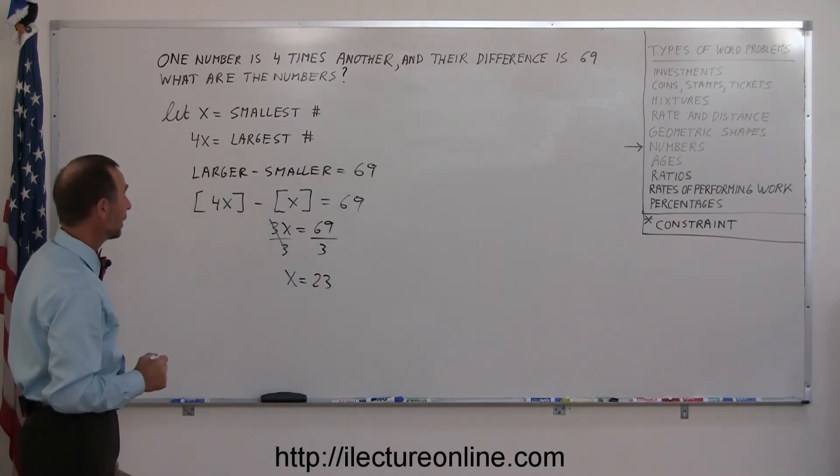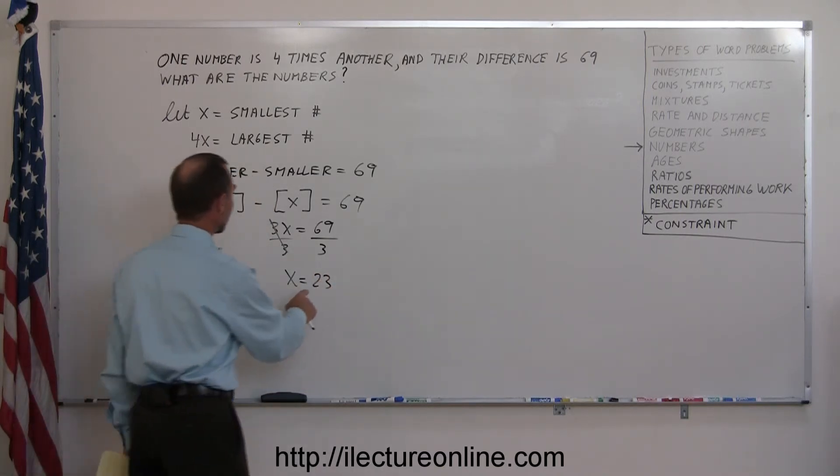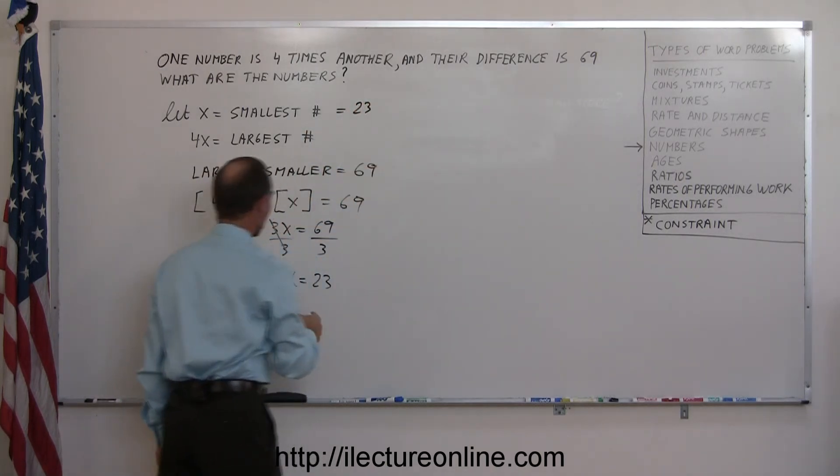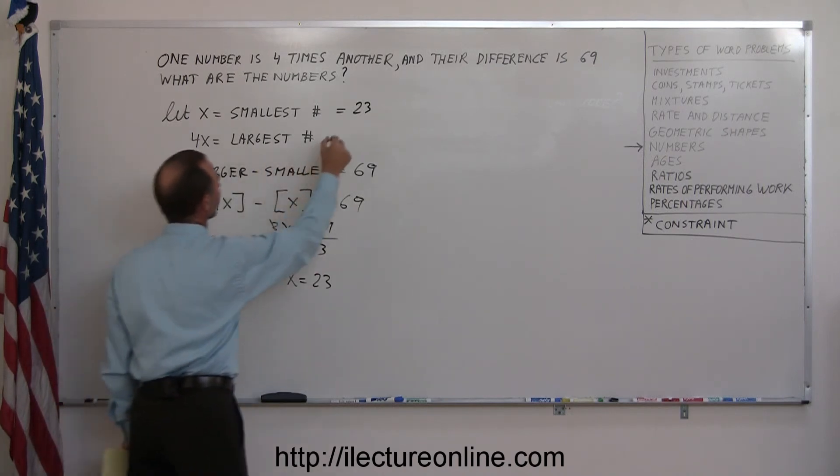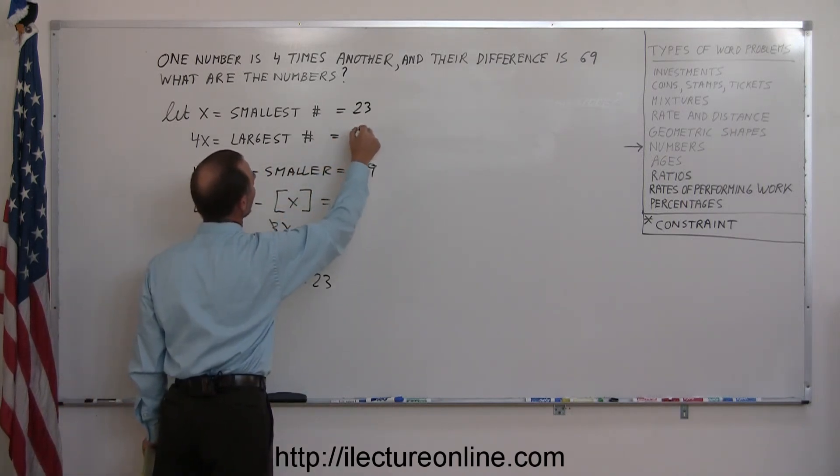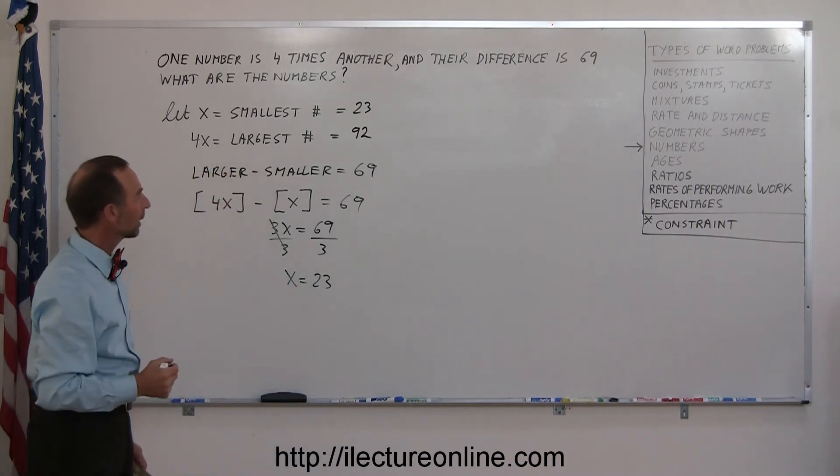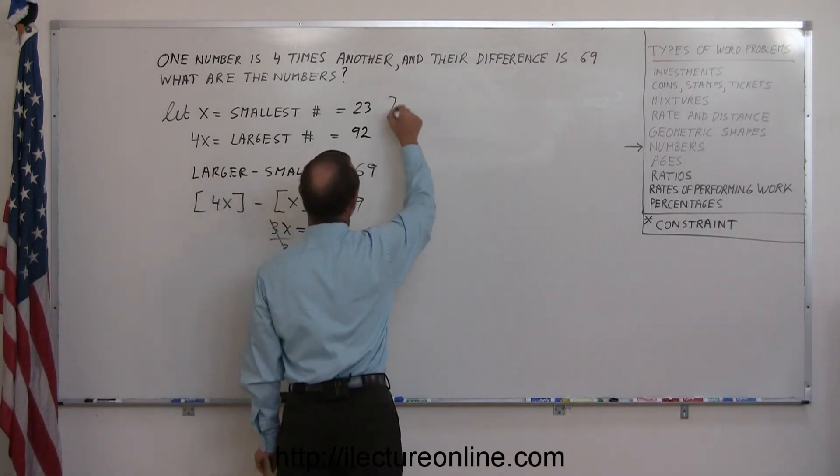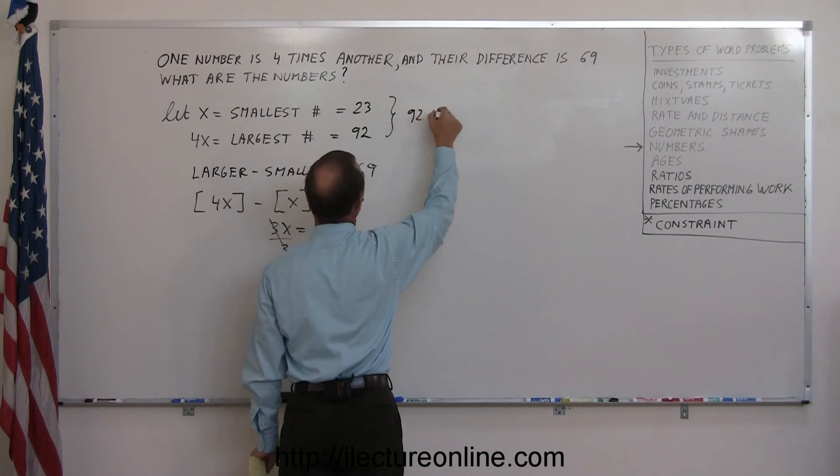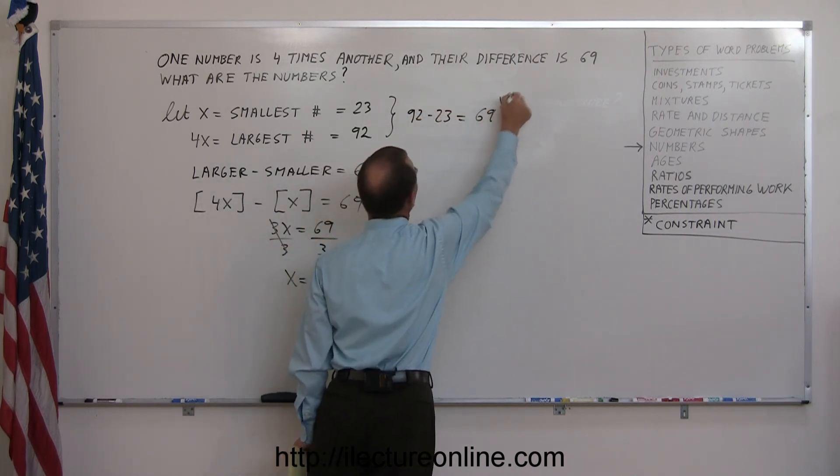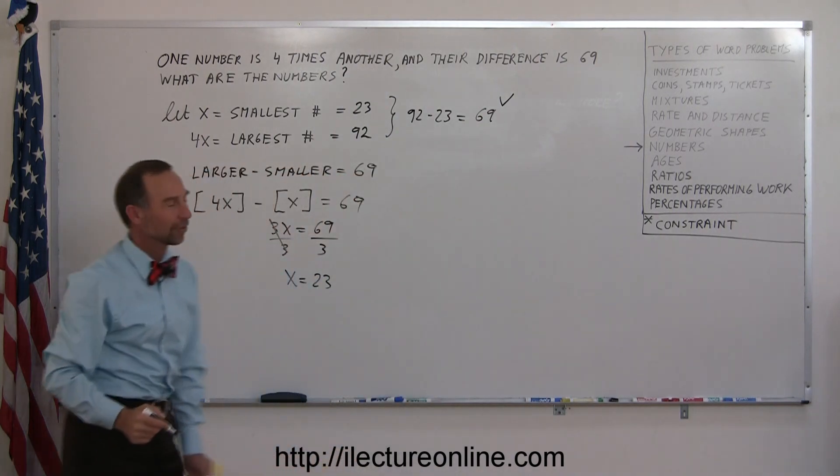Now just to make sure we did it correctly, in this case we think x is 23. And the larger of the two numbers is 4 times that, so 4 times 23 is 92. And if we take the difference between the two, do we get 69? Let's try it out. 92 minus 23, sure enough, 69, and bingo, we got the right answer on that one.